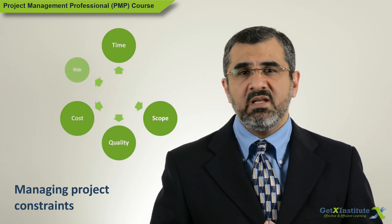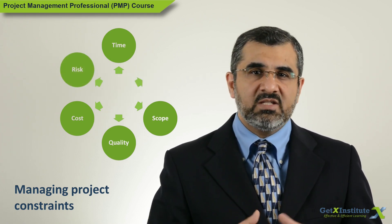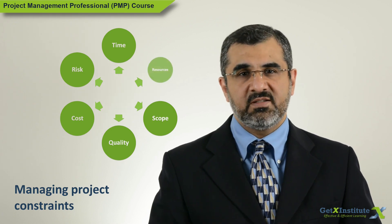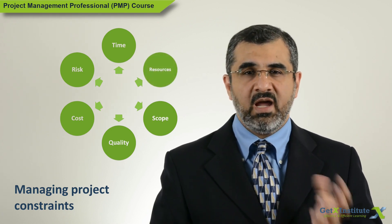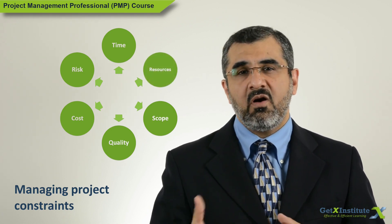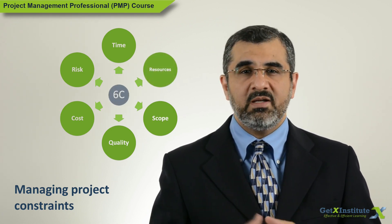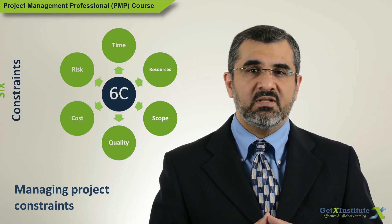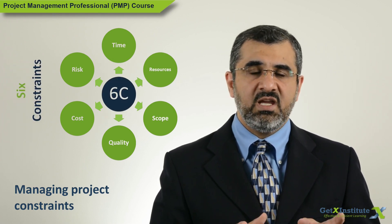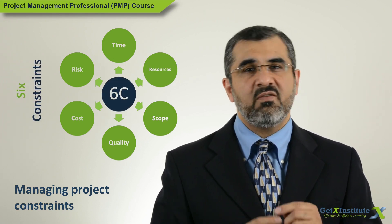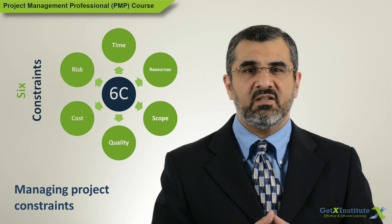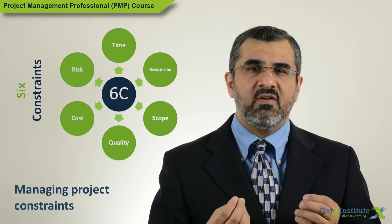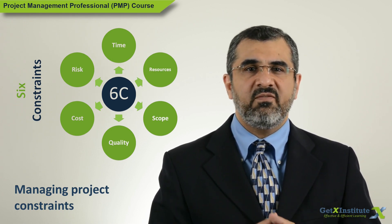That means the triple constraints actually are six constraints: time, cost, scope, quality, risk, and resources. A change to one requires a change to at least one other, but usually several of the other five factors.